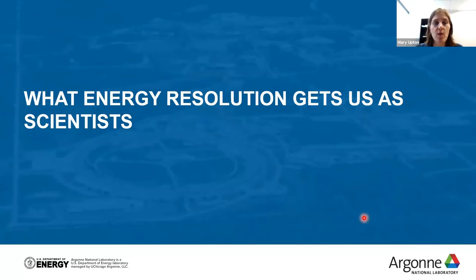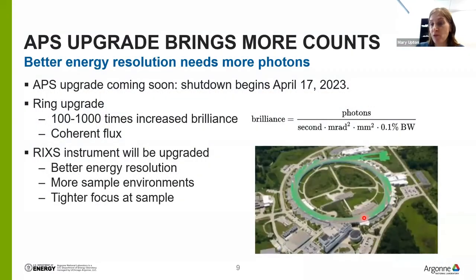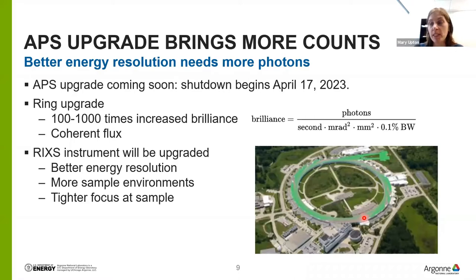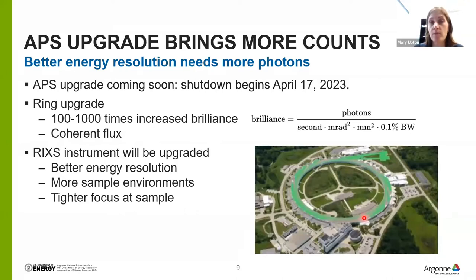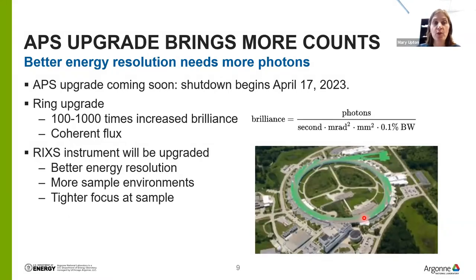Now I'll talk about what energy resolution gets us as scientists. There's always a trade-off between energy resolution and counts — the tighter your energy resolution, the fewer counts you have. This tension has inhibited very tight energy resolution. But this constraint is about to change dramatically: the APS ring is being upgraded, shut down for about a year beginning in 2023, and the upgrade will give us two to three orders of magnitude increase in brilliance — more photons, less divergence, less bandwidth. There will also be coherent flux after this ring upgrade.